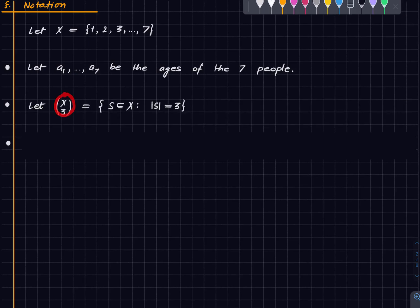And this is one notation. So this is read as x choose 3. It's a standard notation, which is nothing but the set of all those subsets of x which have size 3.